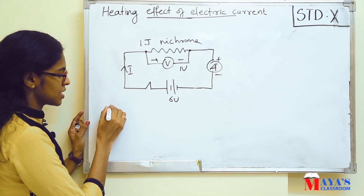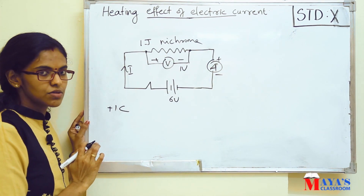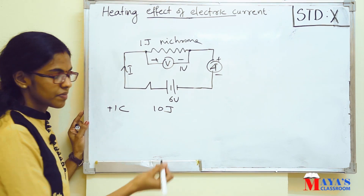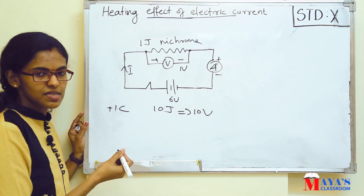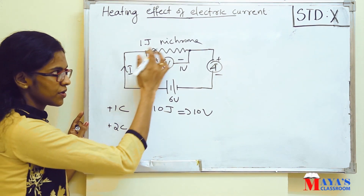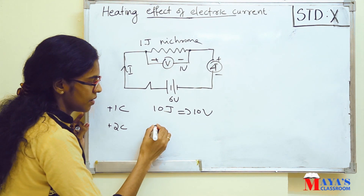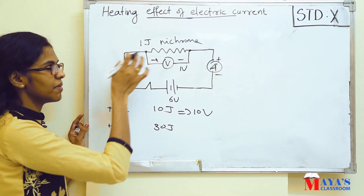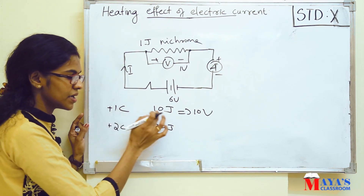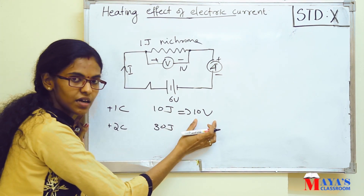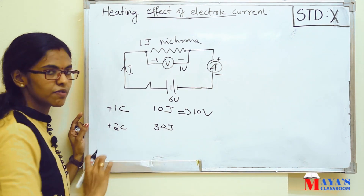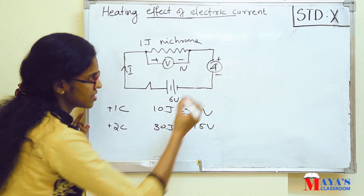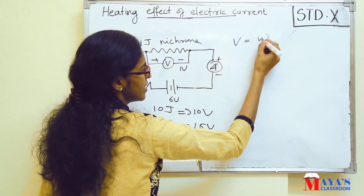For example, if one coulomb charge is transferred from one point to another point and 10 joules of work is done, that is 10 volts. Suppose two coulomb charge is transferred and 30 joules of work is done. If one coulomb charge requires 10 joules of work, then the potential difference at another point is 15 volts.